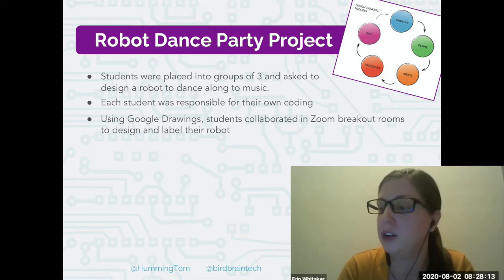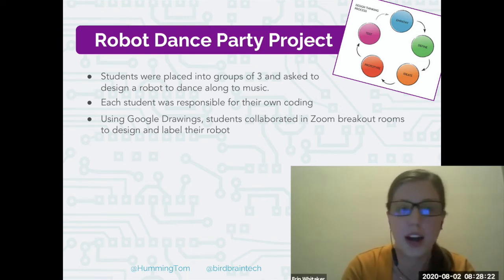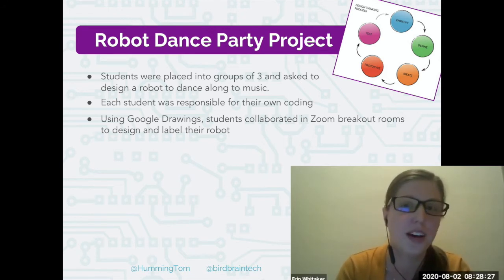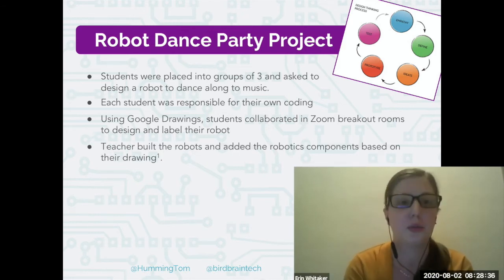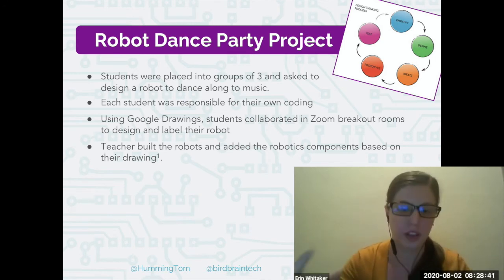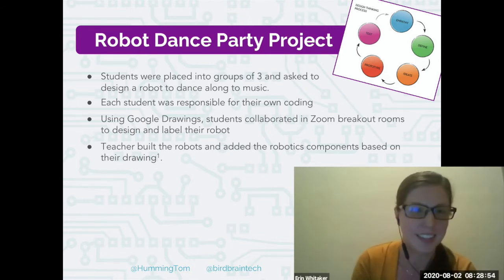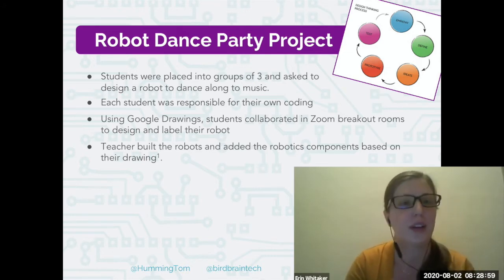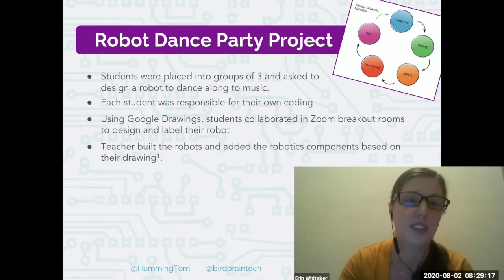First, she had students use Google Drawings as a collaborative tool along with Zoom. They used Zoom breakout rooms to design their robot — sketching it out and labeling it. What was really interesting was the importance of detail. She focuses on the design process in class, so there's a lot of planning before actually building. Students had to plan out what they wanted, and what they thought was detailed wasn't necessarily detailed enough. One group just wrote 'LED light' when labeling their robot, so she put a single-color LED on it. When they came back and said they wanted a tri-color LED, she pointed out they hadn't specified that — a good conversation piece about design and planning as an important piece of the whole process.